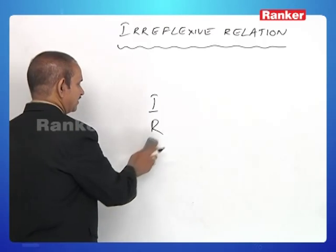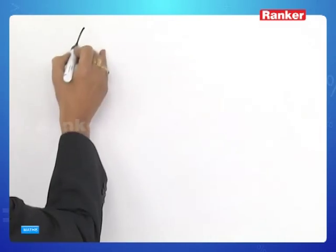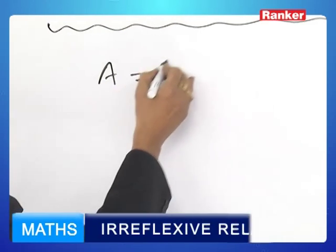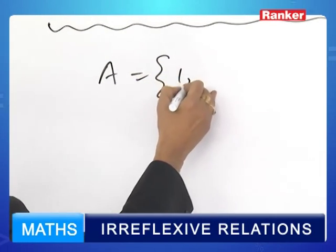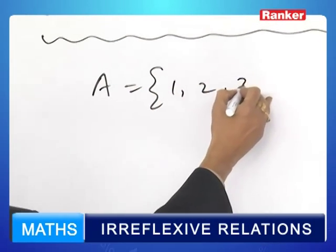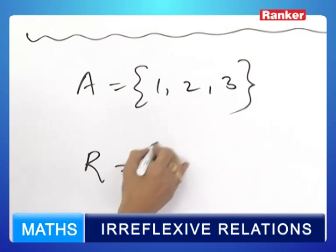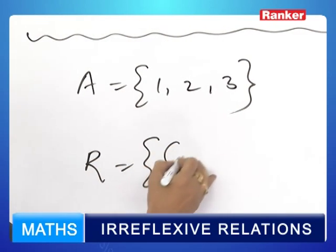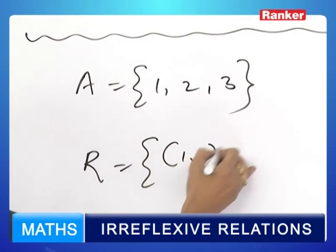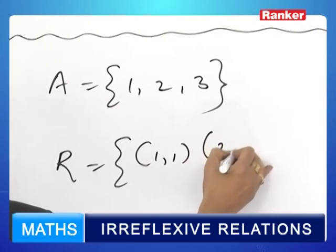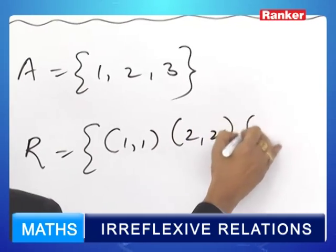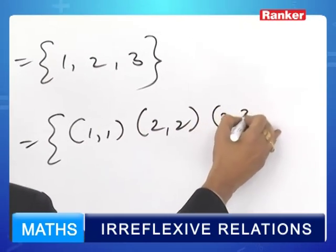Now observe this example. A is equal to {1, 2, 3}. R is equal to {(1,1), (2,2), (2,3)}.